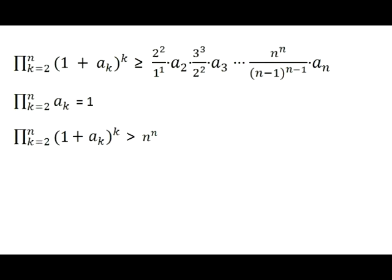If we plug our proven inequalities into the original formula, all the terms on the right side are happily eliminated except for one last expression: n to the power n. And the product of a_2, a_3, etc. is fortunately equal to 1.